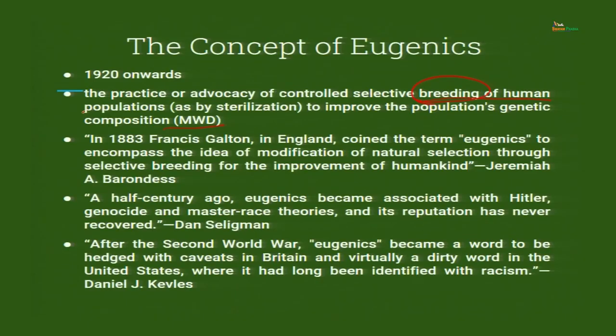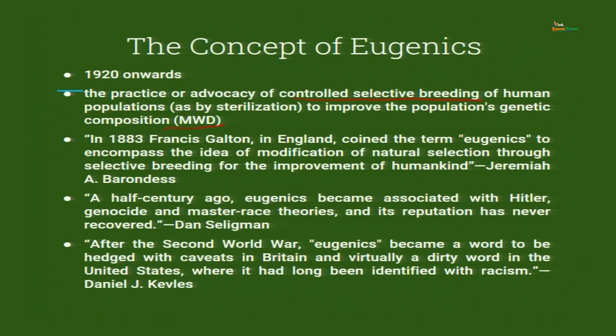When we say 'breeding of human population,' it implies another party with some kind of gain or purpose — including sterilization. Controlled selective breeding means a government in power may ask its citizens not to reproduce at a particular time or to keep to a maximum of one or two children — as practiced in China, where you cannot have more than two children. This represents human intervention into other humans' reproduction systems.